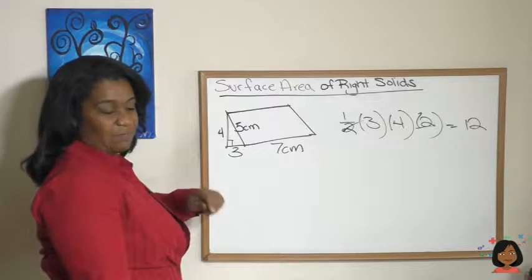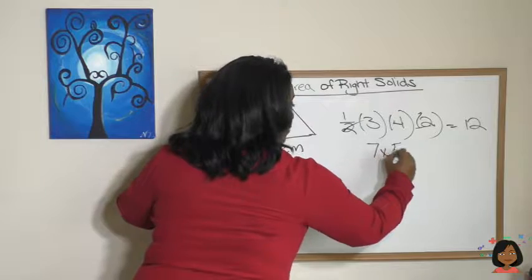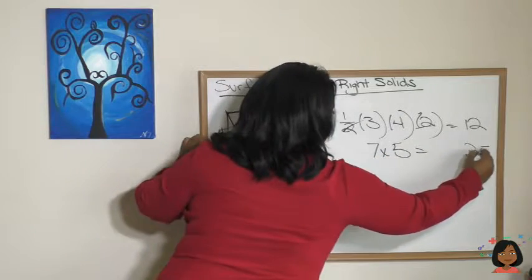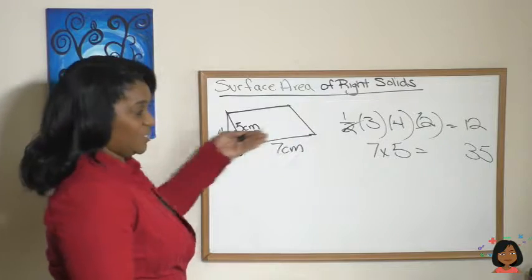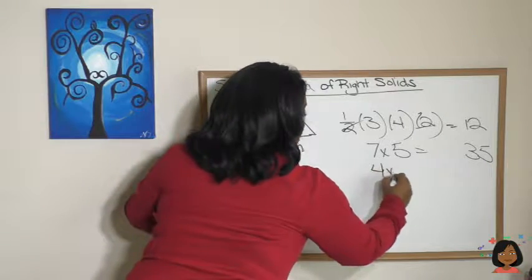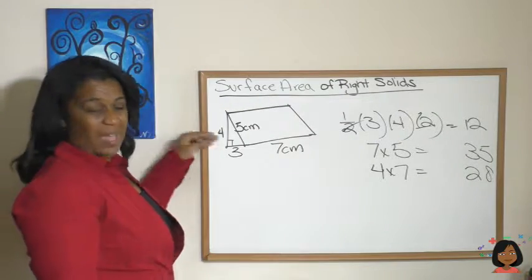All right, we've done the triangles. Let's do this rectangle on the front. It's just going to be seven times five. And there's no duplicating there. We get 35. Let's do the rectangle on the back. It's going to be four times seven. Twenty-eight.